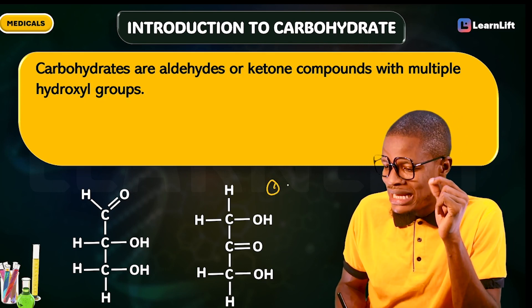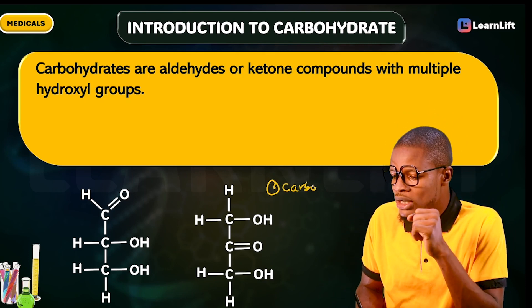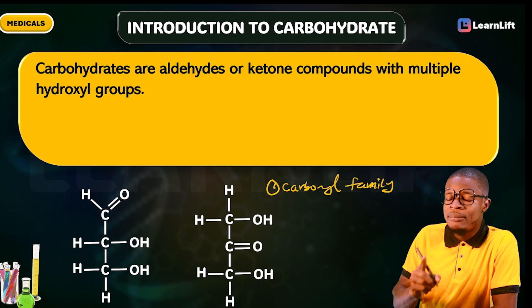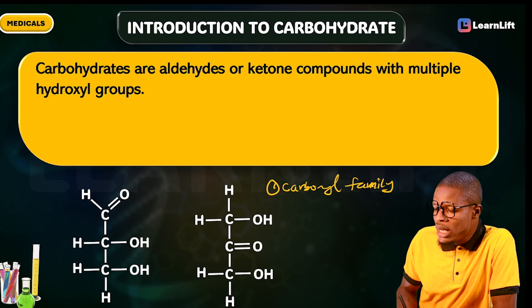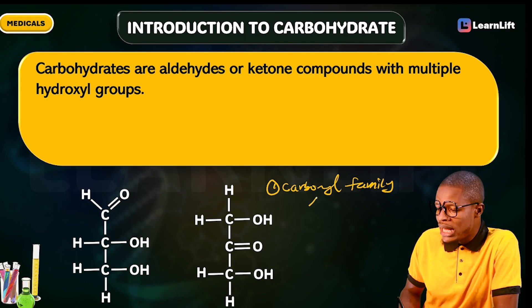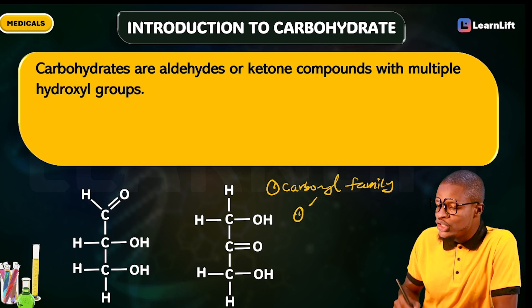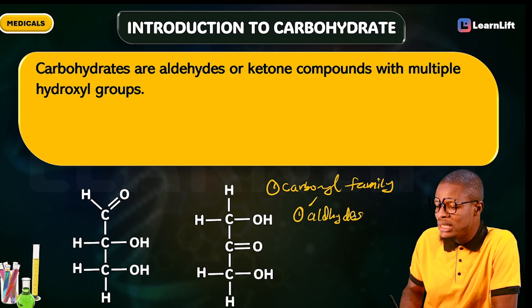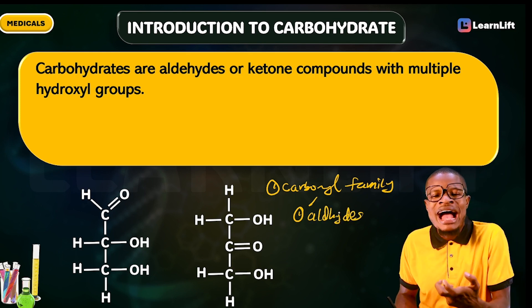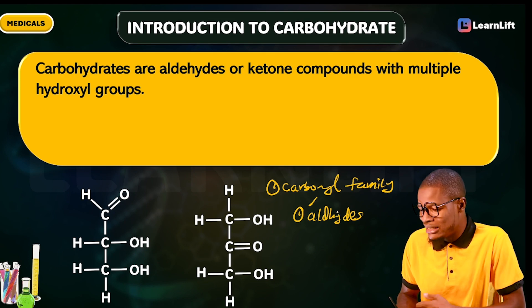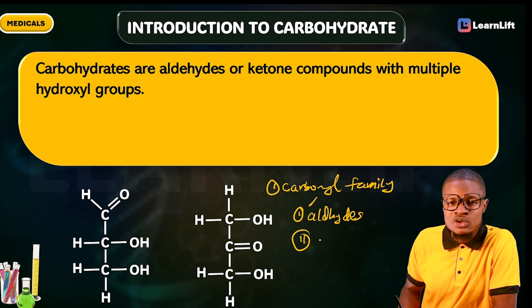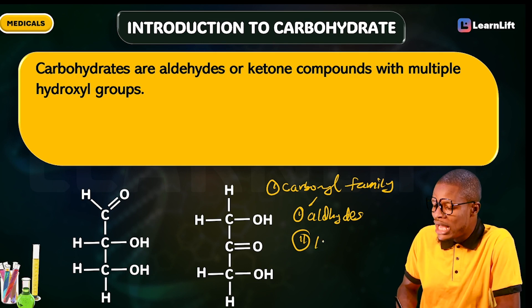The carbonyl family is divided into two parts. The first part is called aldehydes, also called alkanals. The second part is called alkanones, also called ketones. So the carbonyl family consists of two members: the aldehydes and the ketones.